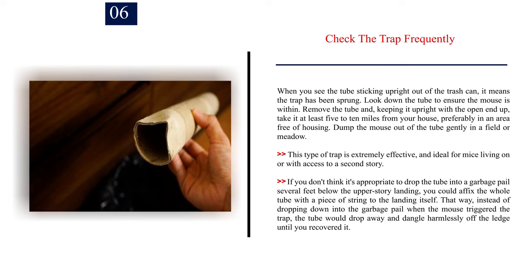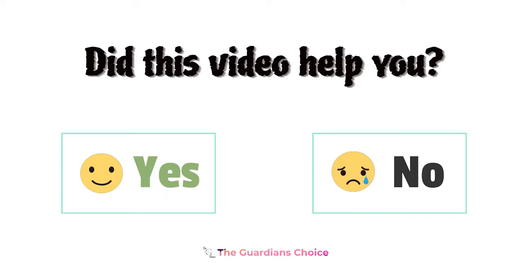If you don't think it's appropriate to drop the tube into a garbage pail several feet below the upper story landing, you could affix the whole tube with a piece of string to the landing itself. That way, instead of dropping down into the garbage pail when the mouse triggered the trap, the tube would drop away and dangle harmlessly off the ledge until you recovered it.